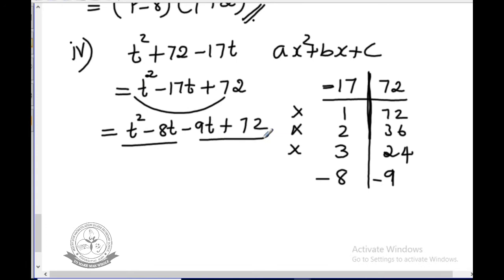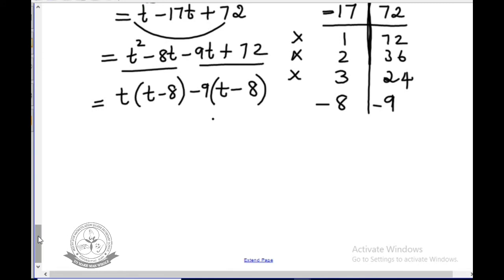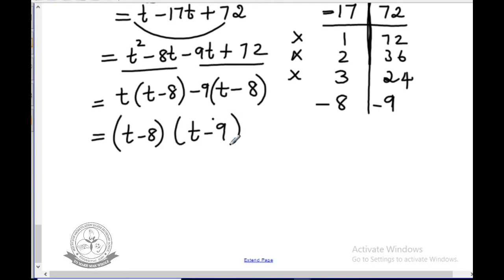Take t outside the first two terms: t(t minus 8). Take minus 9 outside the next two terms: minus 9(t minus 8). Since t minus 8 is common, take it out. The remaining terms are t minus 9. The answer is (t minus 8)(t minus 9).